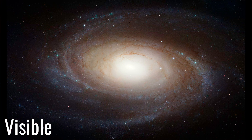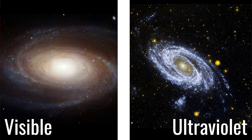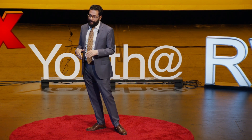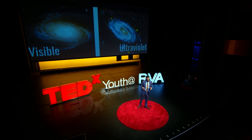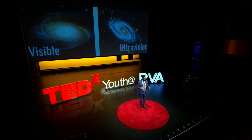Now let's have an example from ultraviolet light. Here is a nearby galaxy as it appears in visible light — mostly a fuzzy glow. Now we'll look at the same galaxy in ultraviolet light. You can see that it's much more concentrated in a few regions, in particular these spiral arms. This is where the hot, short-lived stars are. They're hot, so they're glowing in the higher energy ultraviolet light. These are the stars that do interesting things like explode.